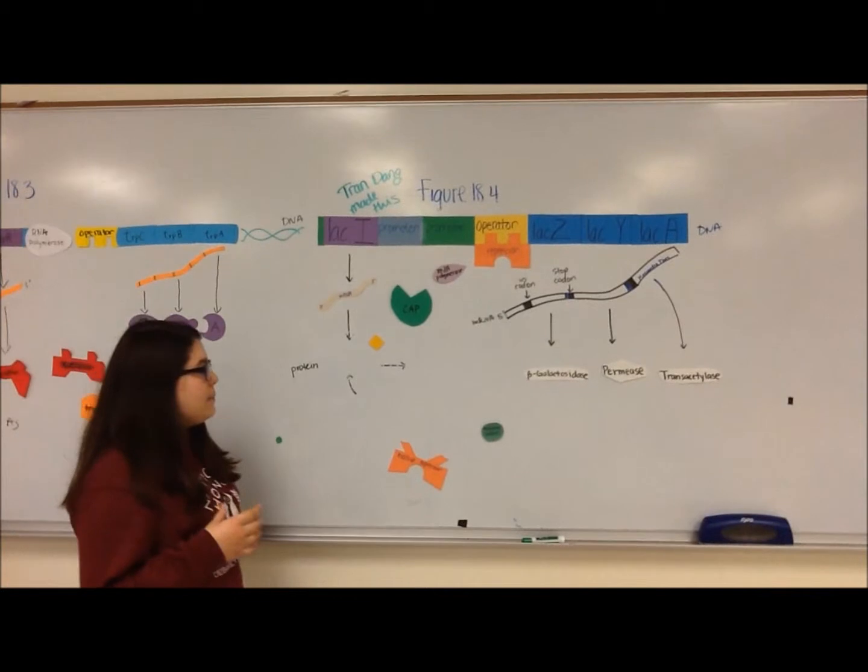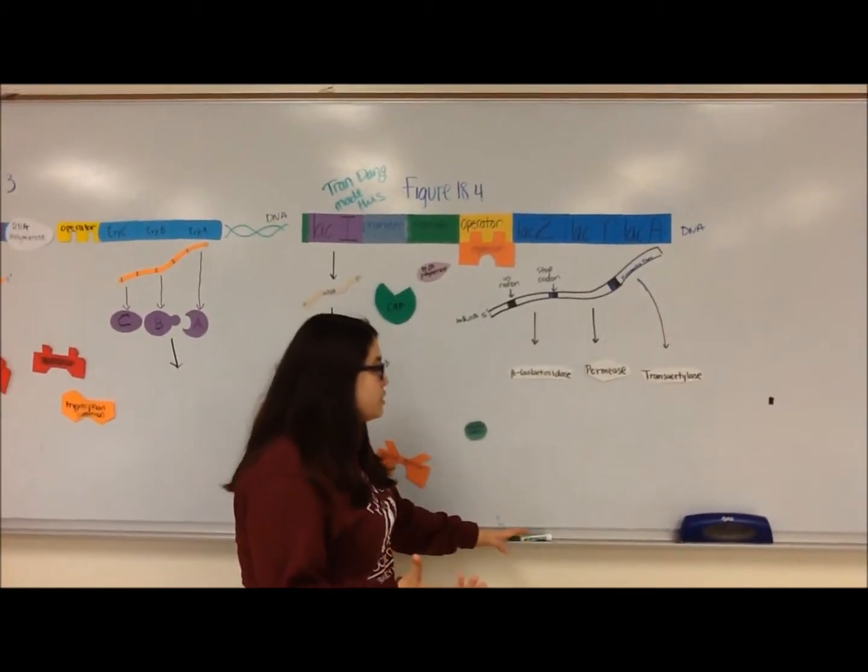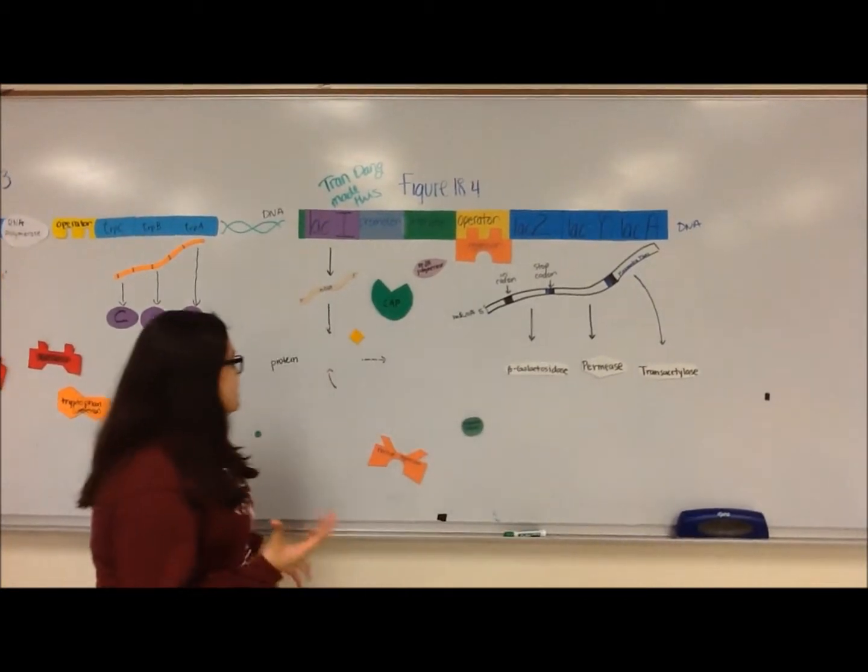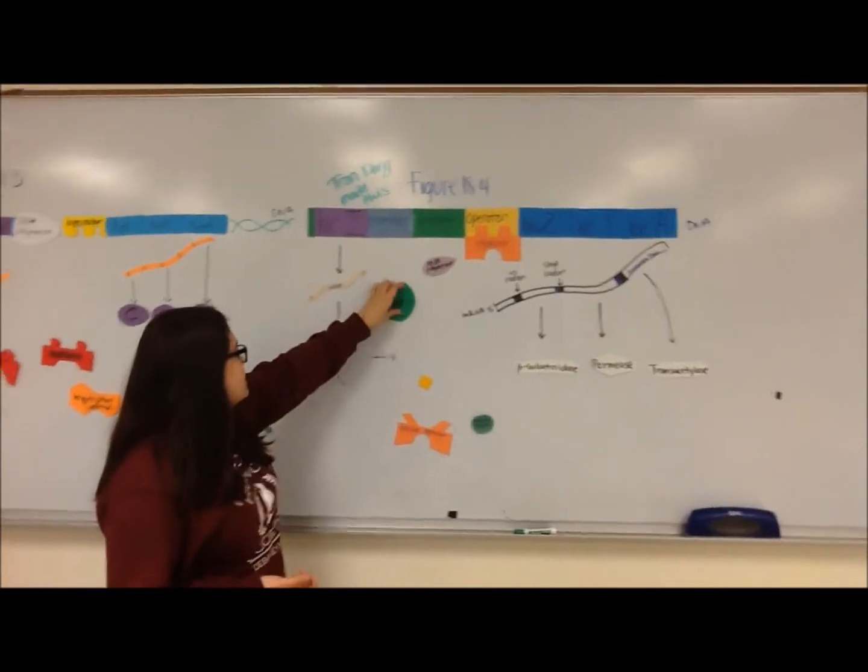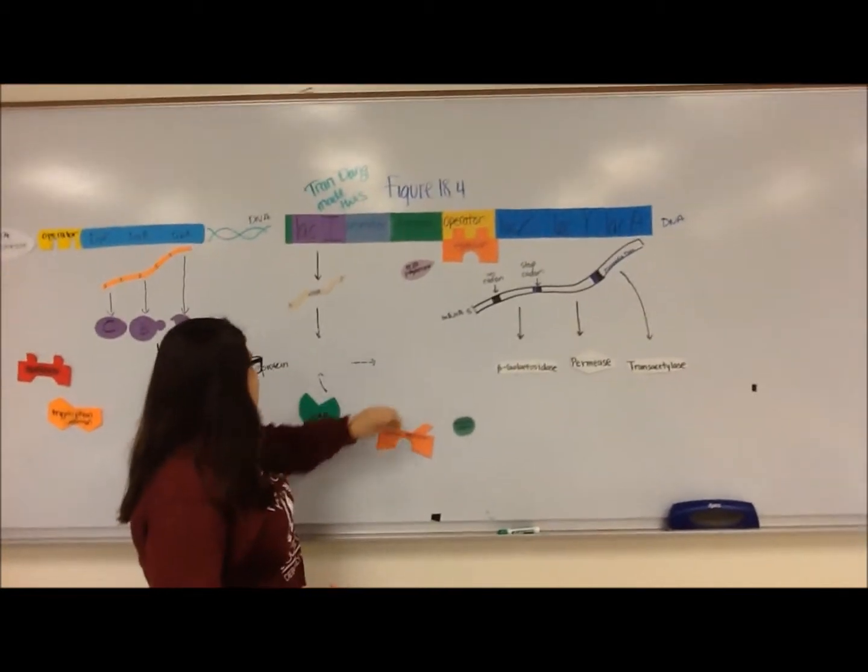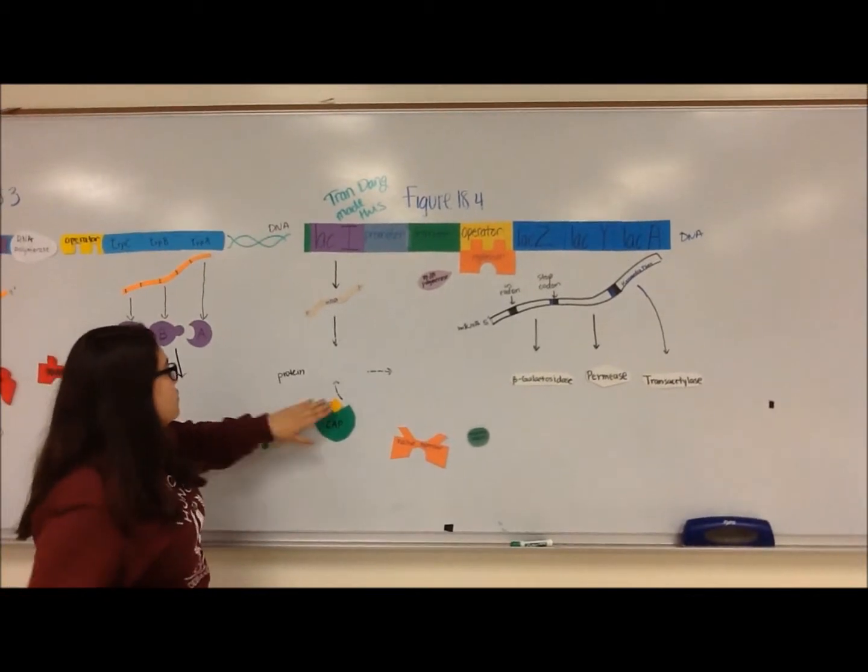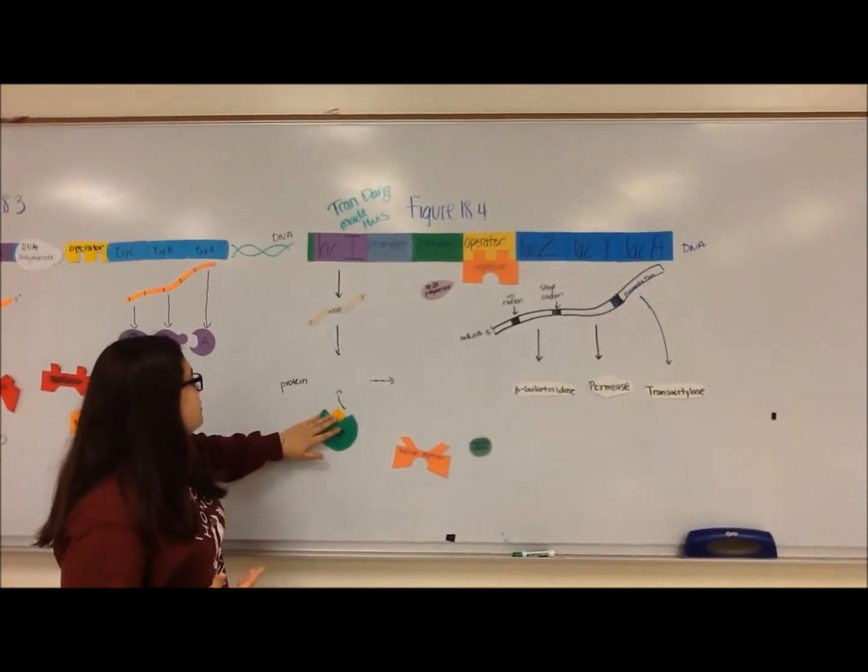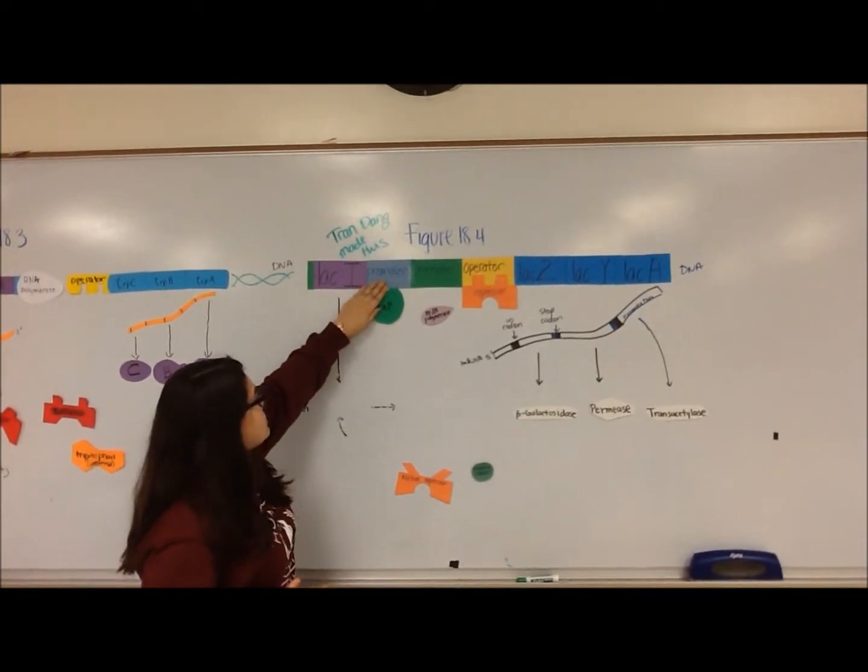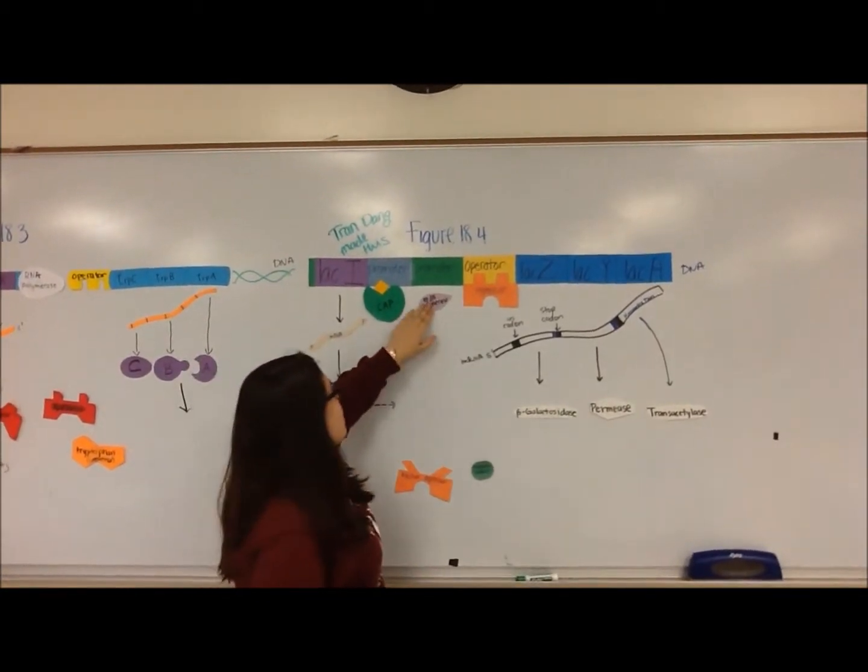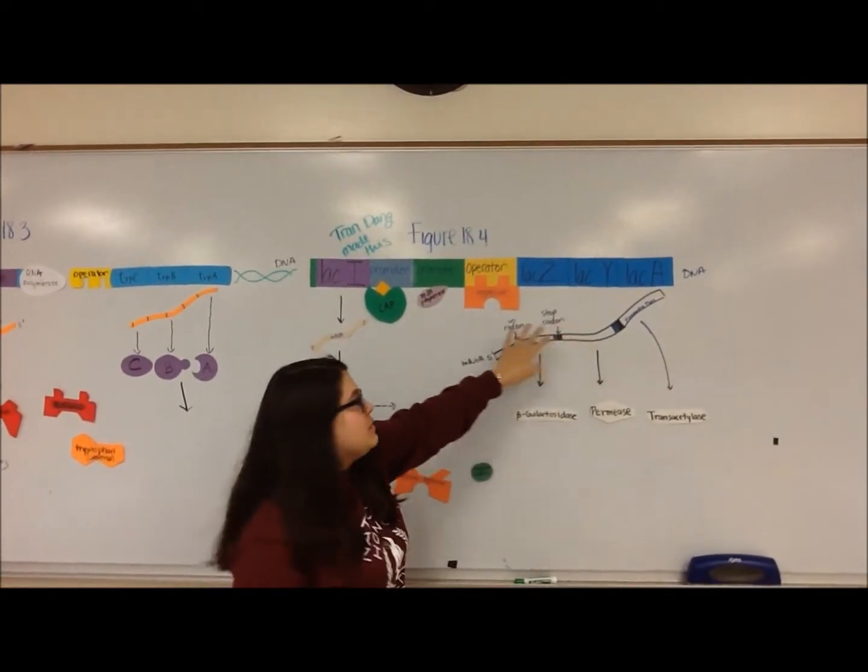When there's a high concentration of glucose, then there is a high concentration of cAMP, and cAMP binds to the regulatory protein CAP, which activates it and changes its shape. The activated CAP binds to the promoter and enables RNA polymerase to continue the transcription of these genes.